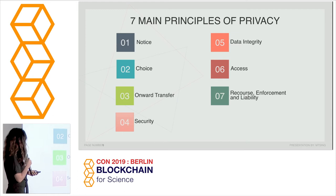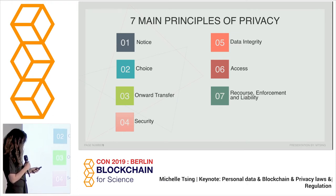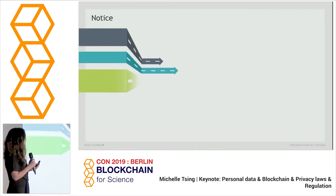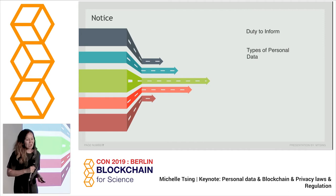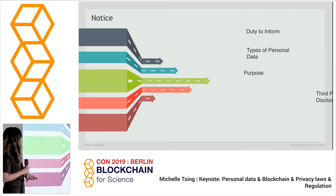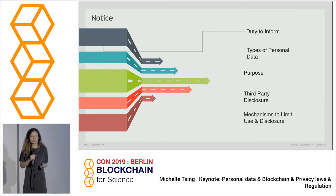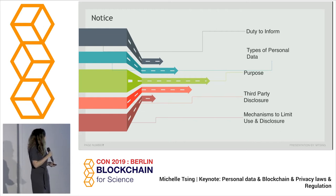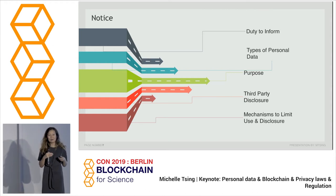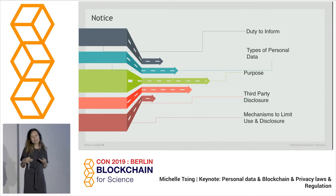The seven principles are: notice, choice, onward transfer, security, data integrity, access, and recourse, enforcement, and liability. With notice, you want to tell your community or user, before you use their data, how it will be used — most of it is a privacy policy on your website. And if you're repurposing the data, it's important to let your community know before you reuse their data so they know what the new purpose is, especially for health data. There's a conversation about how people want to contribute their health data to science research, but how do we encrypt that data and allow the person to share only what they want to share?